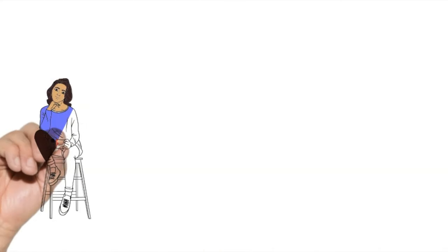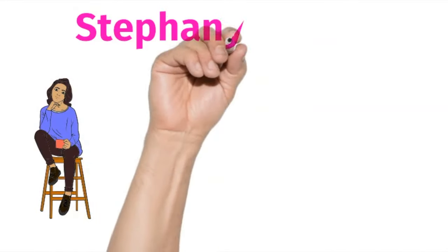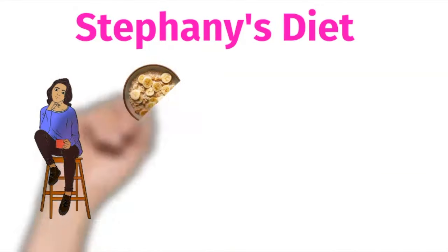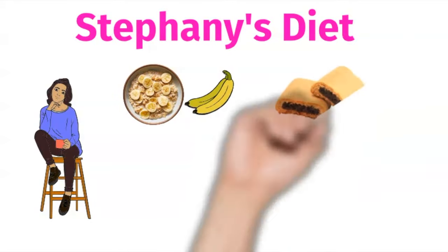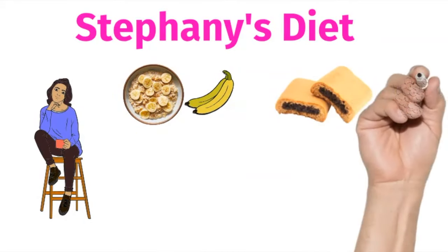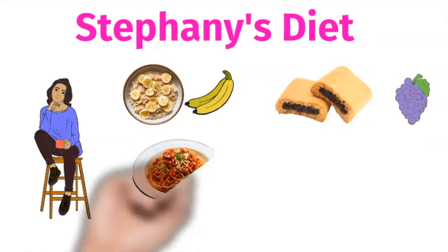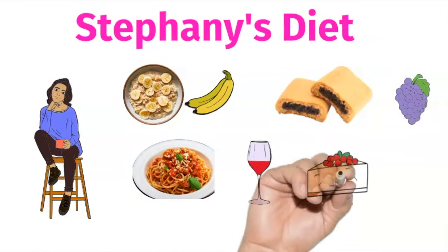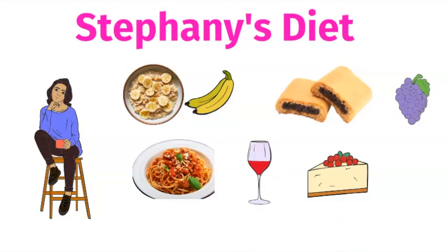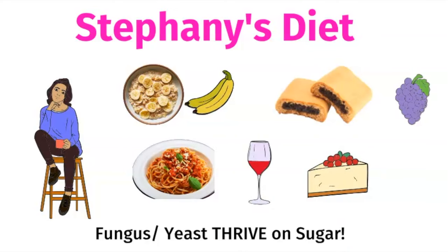Returning to Stephanie's case — why did she get SIFO? I reviewed her diet carefully. For breakfast she would have oatmeal with bananas. Her snacks were usually fig bars and grapes. She loved pasta for dinner with a glass of wine, followed by a little dessert. Clearly she had a sweet tooth, and remember, fungus and yeast thrive on sugar. On top of this, she had taken a few rounds of antibiotics for sinus infections in the last year.